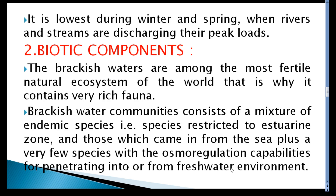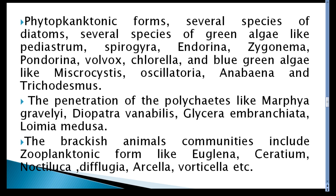Phytoplankton forms include several species of green algae such as Pediastrum, Spirogyra, Endorina, Zygnema, Pandorina, Volvox, and Chlorella. Blue-green algae include Microcystis, Oscillatoria, Anabaena, and Trichodesmium. Benthic forms include polychaetes, Glycera, Dioptera, Neanthes, Glyceria, Branchiata, Loima, and Medusa as brackish water animals.